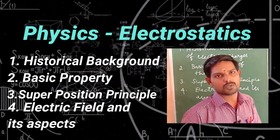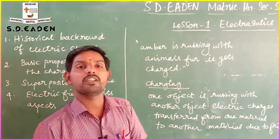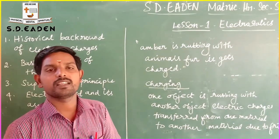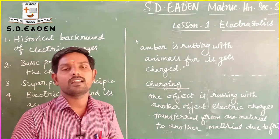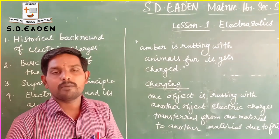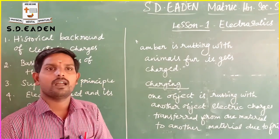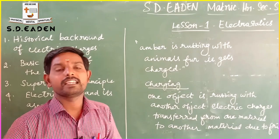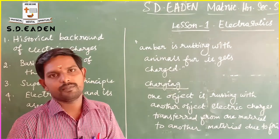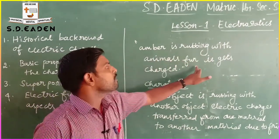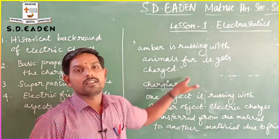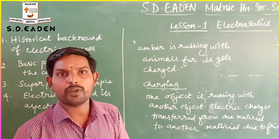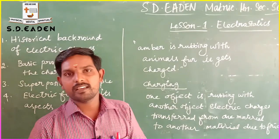Now we are going to discuss the first topic: historical background of electric charges. About two million years ago, the ancient Greeks noticed that one material called amber, which is a solid and translucent material, when rubbed with animal fur, gets charged. The ancient Greeks found this, but they also noticed that not only amber has this property.